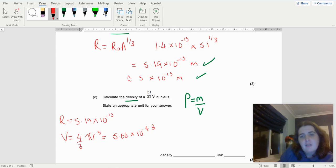So mass, I've got 51 nucleons, and they are 1.66 × 10⁻²⁷.